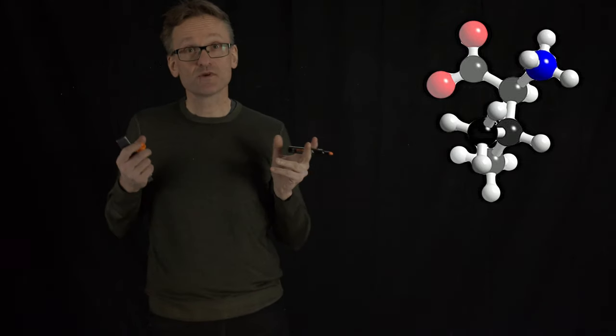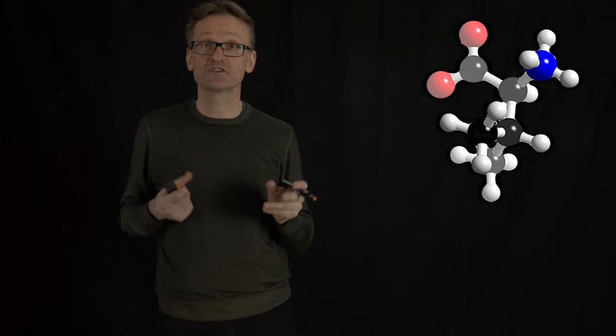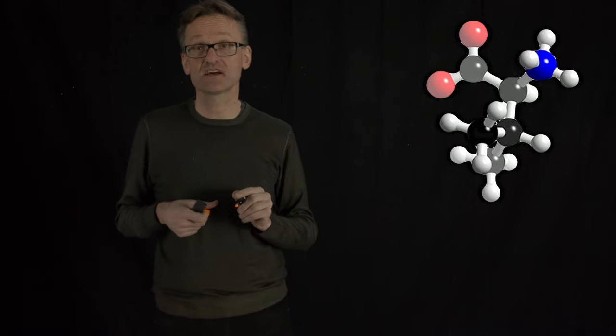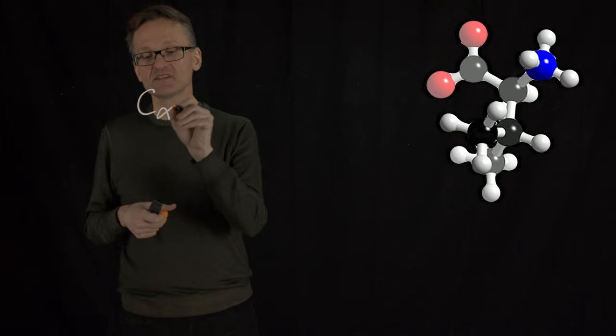Just as we have names for those torsions that we call them chi-1, chi-2, chi-3, etc., in the side chain, as I'm moving out from the C-alpha.